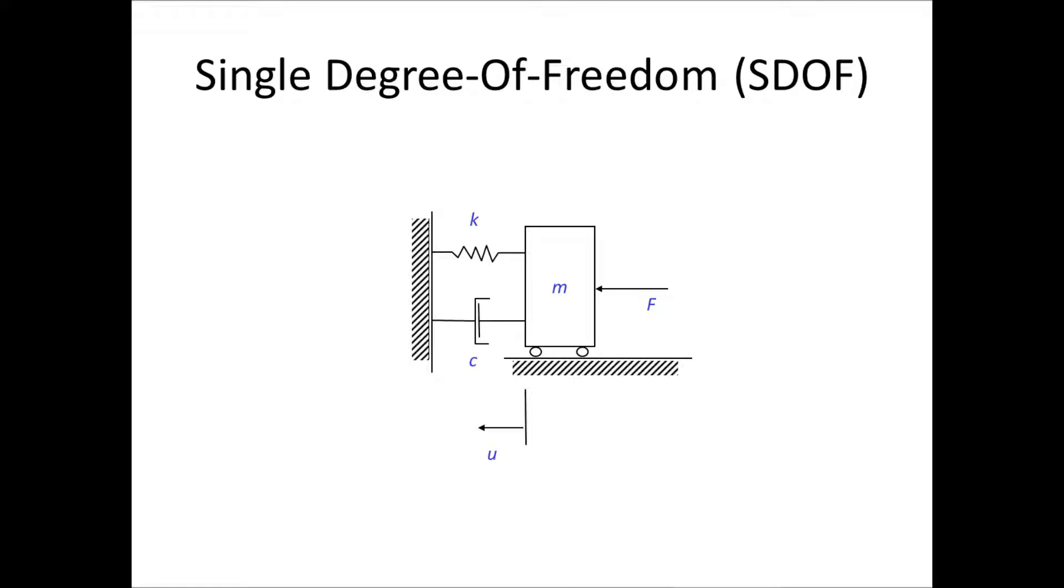So we start with a single degree of freedom system. This system consists of one mass connected to one spring and one viscous damper. We apply a force F to this system and we look at the resulting displacement U.